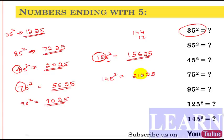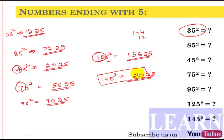For 145 squared: write 25, and for 14 times 15 — 14 squared is 196 plus 14 gives 210 — so the answer is 21025. It's very easy to find the square of any number ending with 5. Practice all the problems so you can solve them within one second. Better practice well and solve at a faster rate.